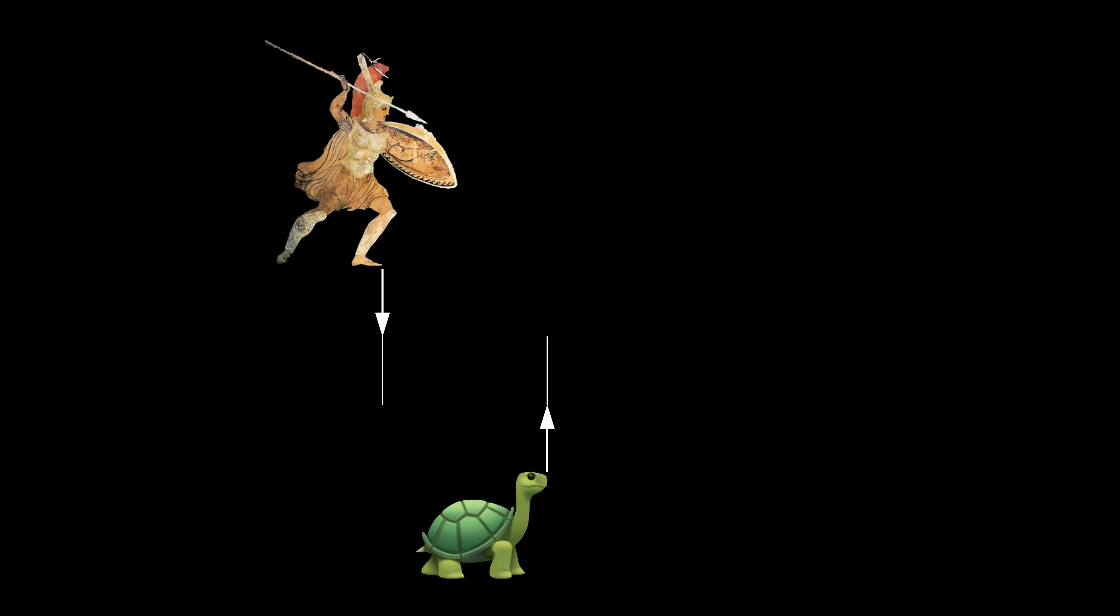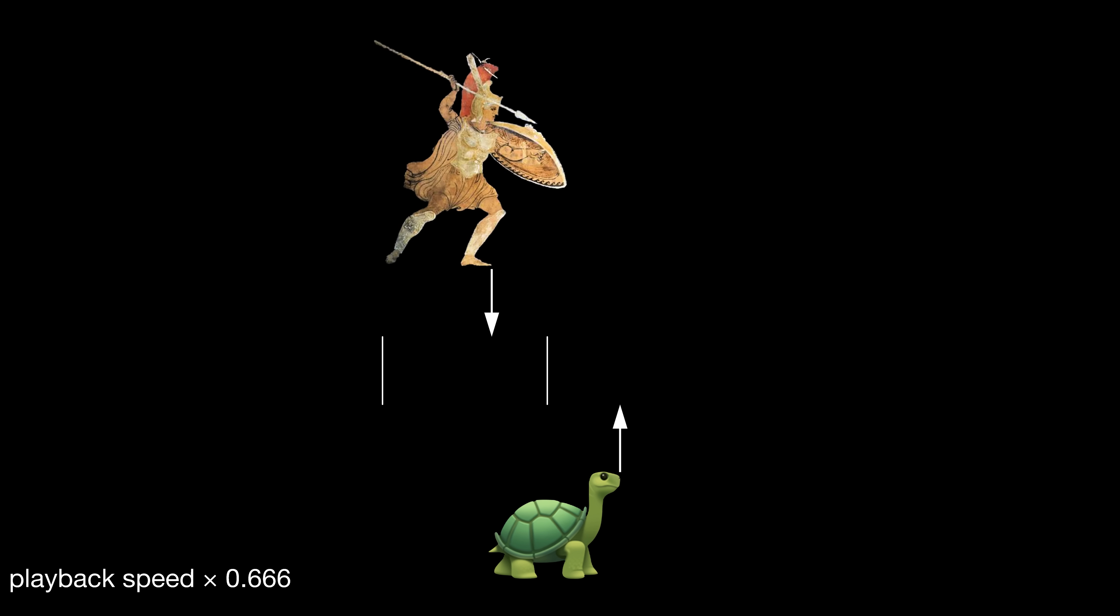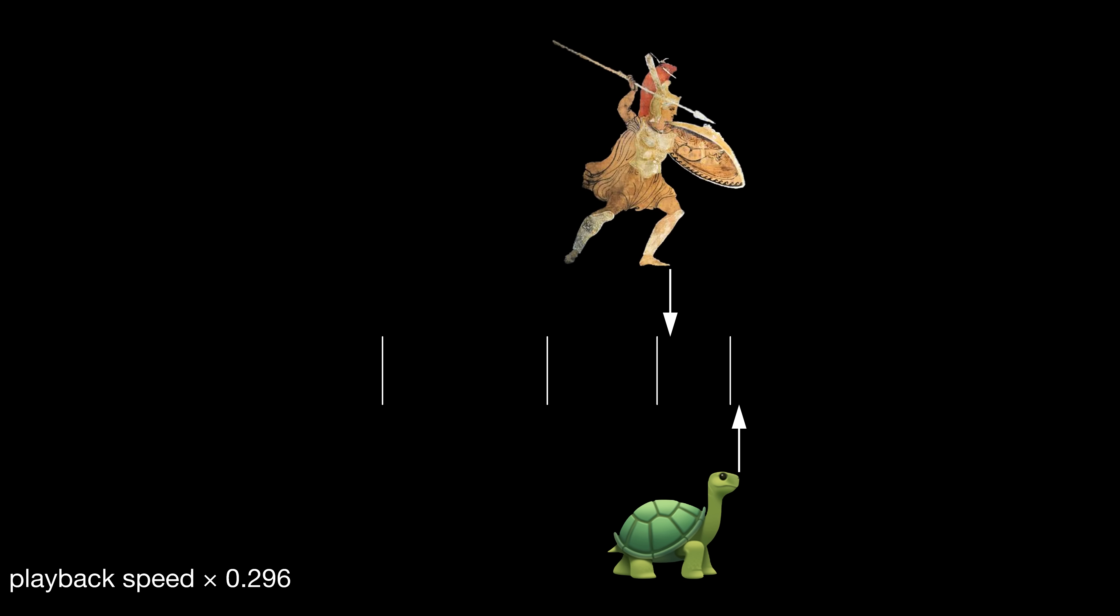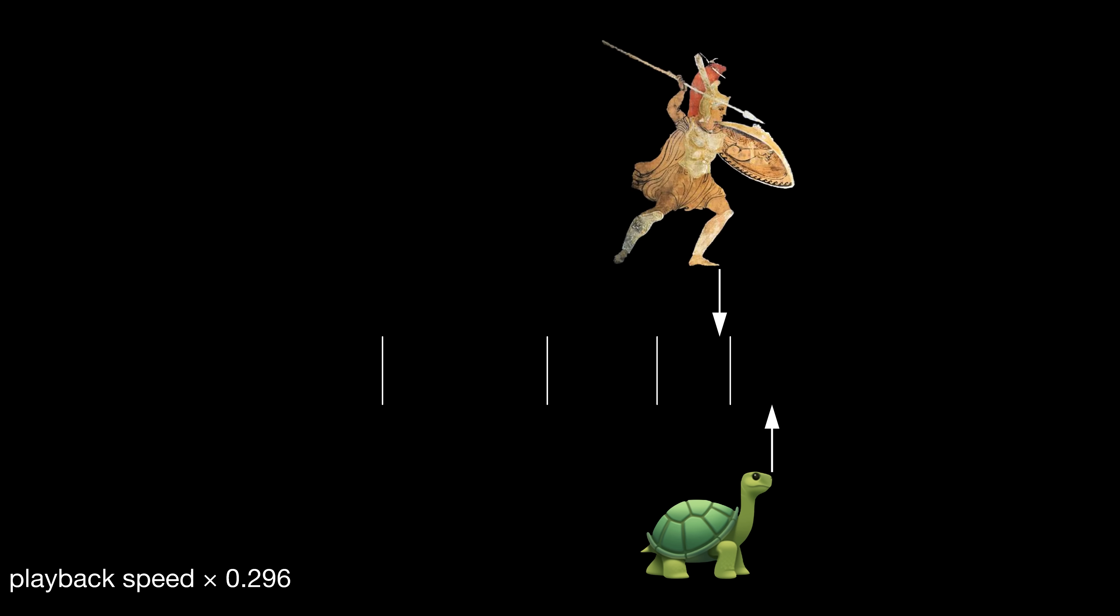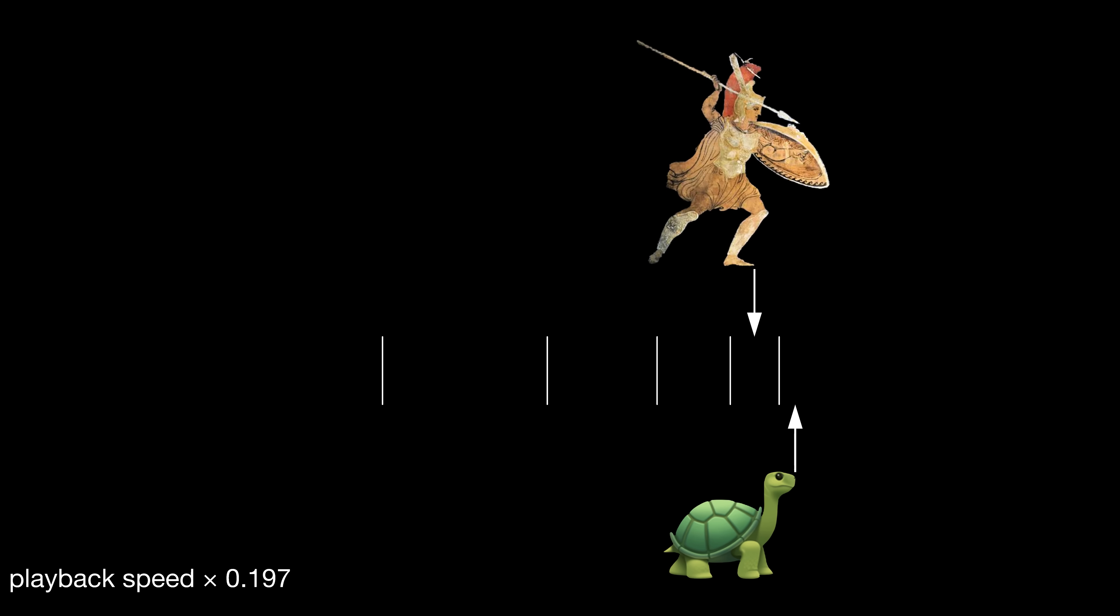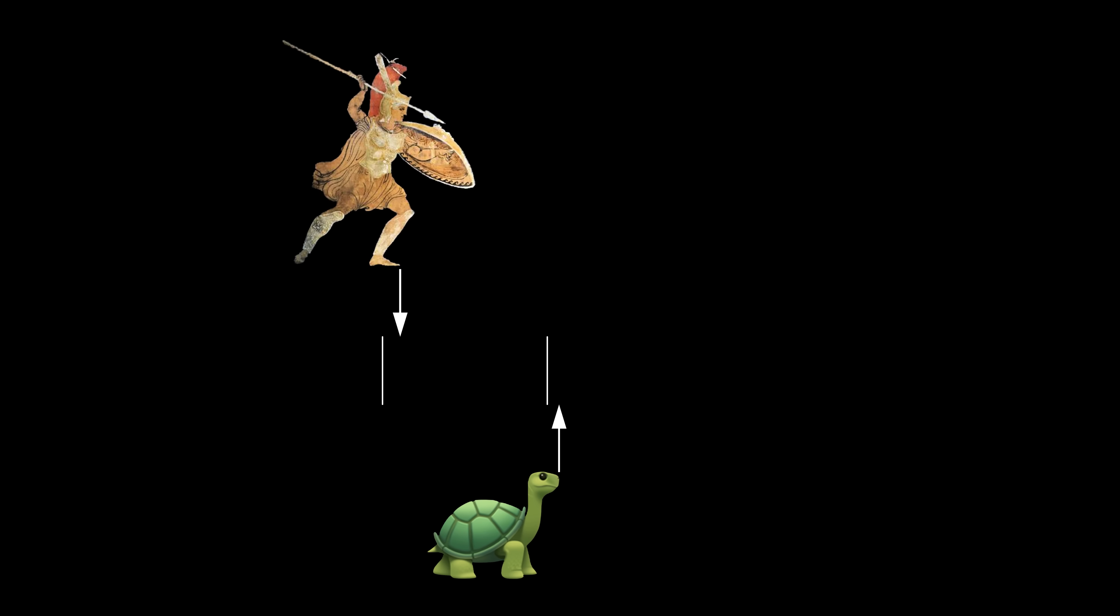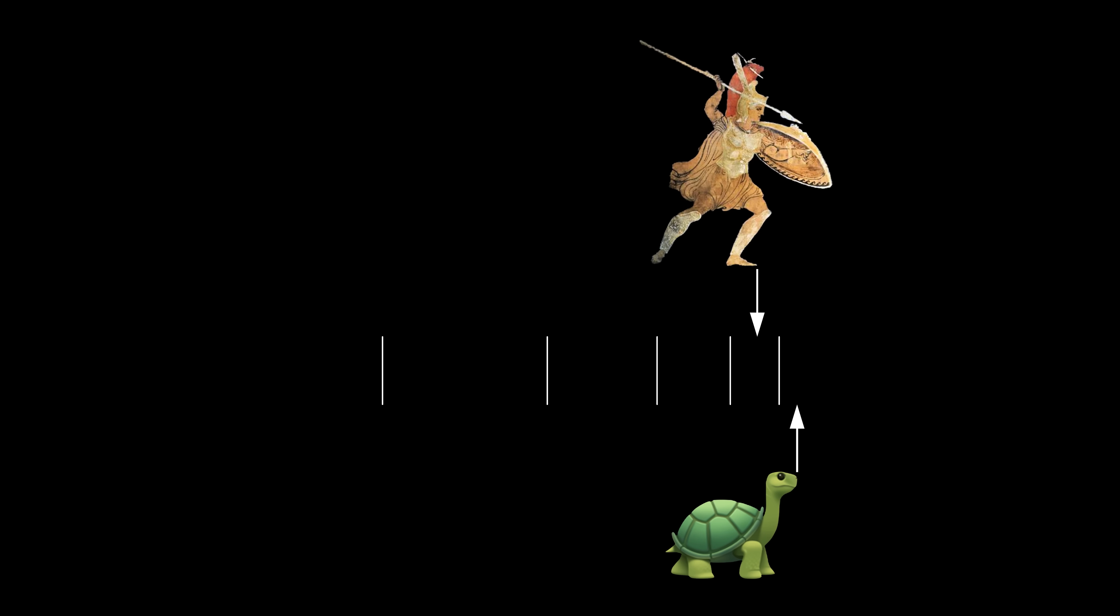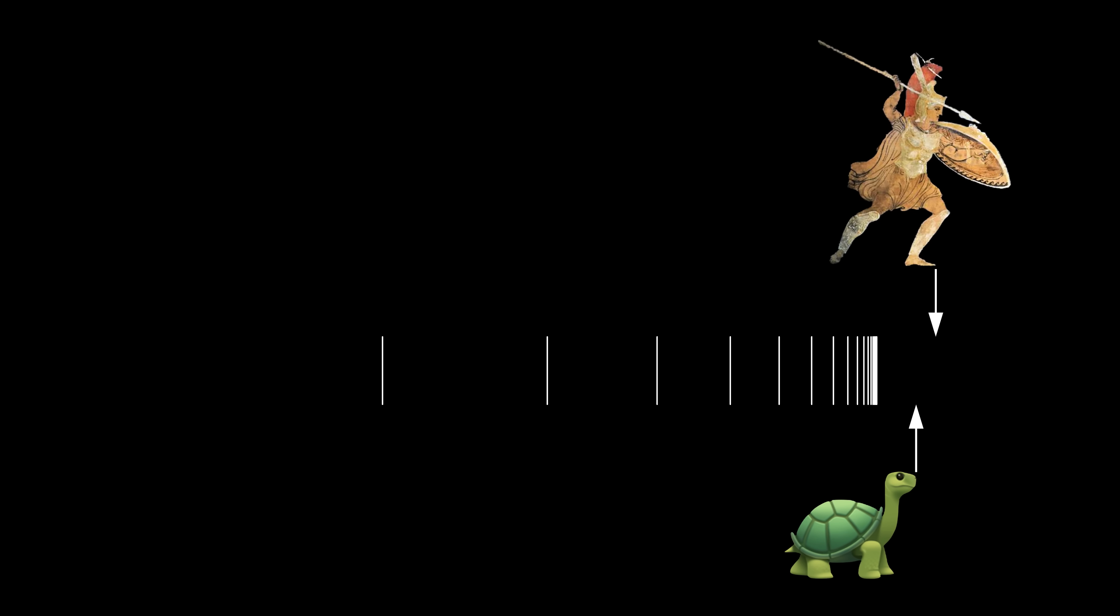And by the time Achilles gets to that second point where the tortoise was, the tortoise has moved on to a third point. And so on. So Achilles has to do infinitely many things before he can actually overtake the tortoise. But of course he can overtake. Each step of getting to where the tortoise was happens faster and faster, and he overtakes in a finite amount of time, even though he does infinitely many of these catching up moves.